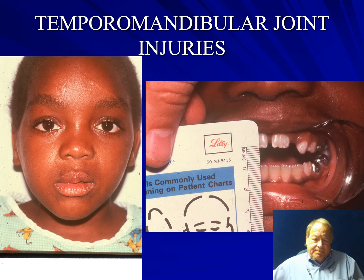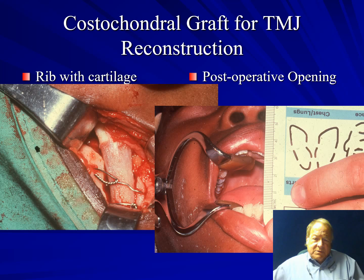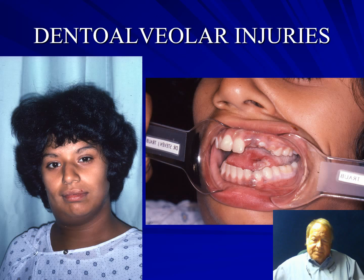Temporomandibular joint injuries also become part and parcel of facial trauma. This is a childhood subcondylar fracture where the joint became ankylosed with a maximal interincisal opening of approximately eight to nine millimeters. On the panorex X-ray there is complete sclerosis of the right temporomandibular joint, while the left condyle appears normal. Treatment was placement of a costochondral graft — a piece of rib with bone and cartilage mortised into the side of the jaw — establishing a new articular surface. The immediate interincisal opening following surgery was almost 30 millimeters.